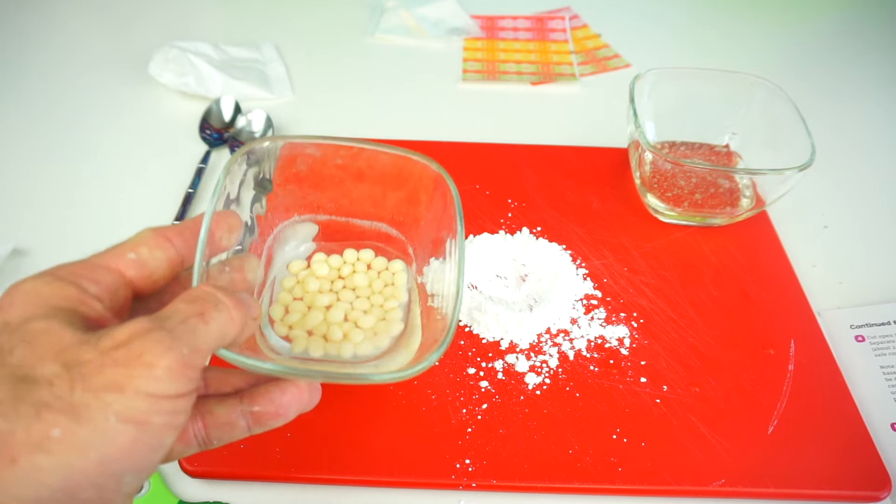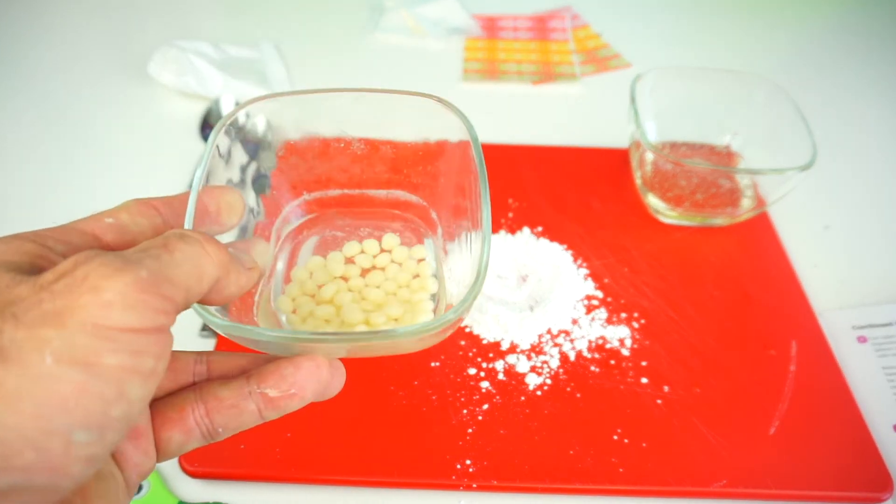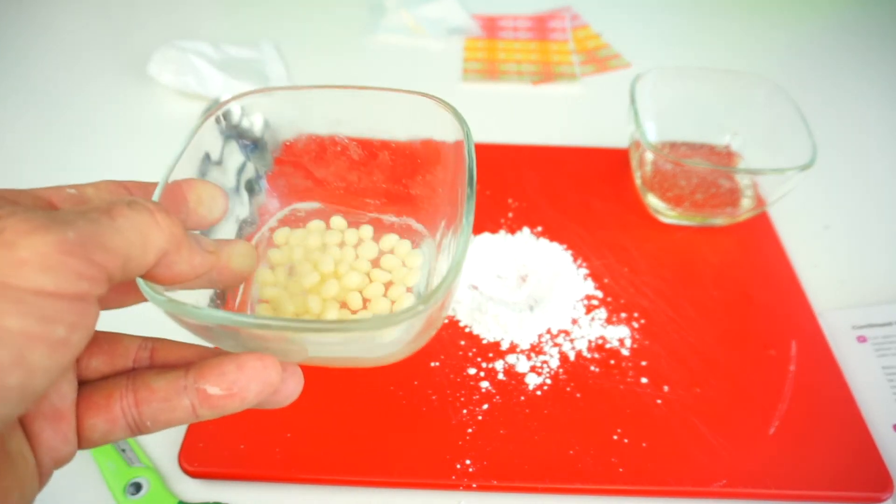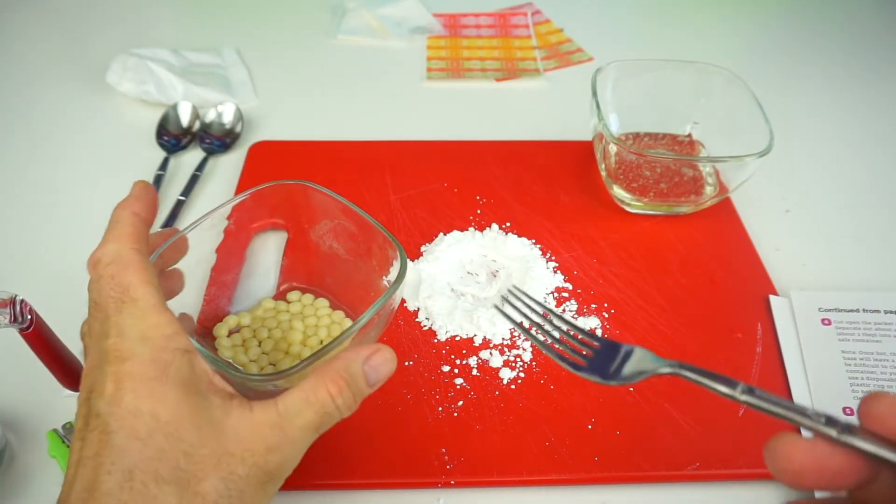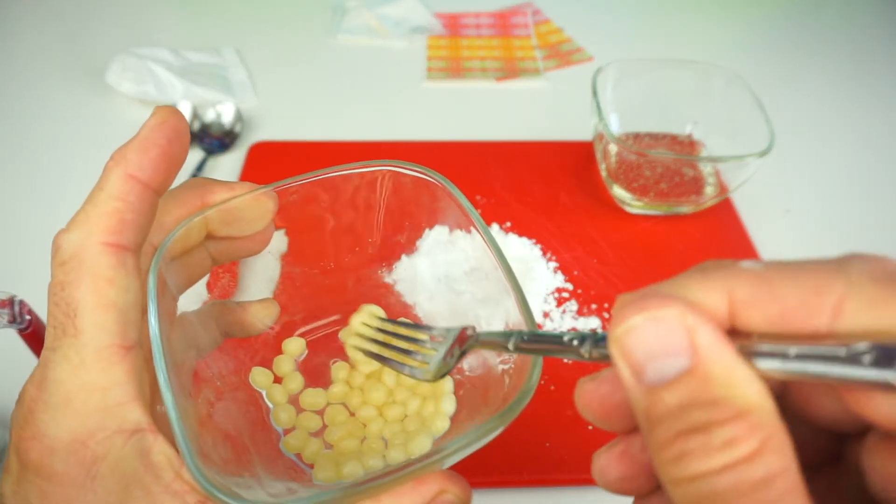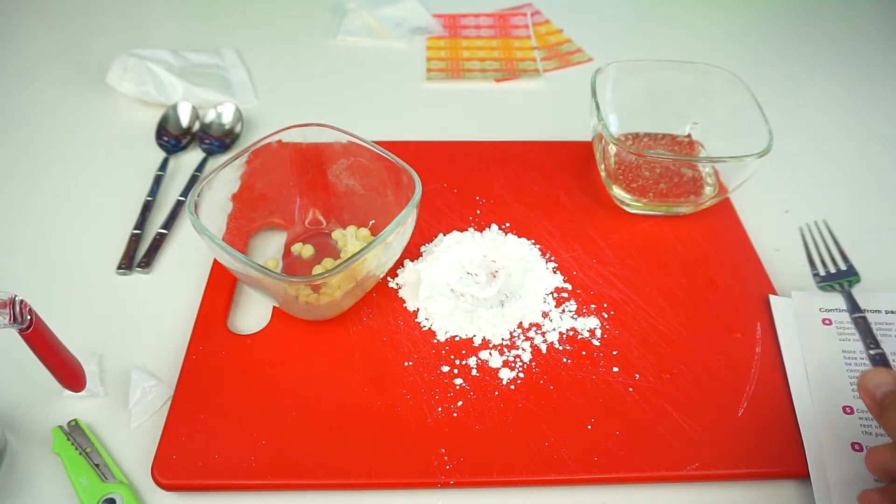Next thing we need to do is drain some of the water out of the gum base and microwave for 30 seconds or until soft. Okay, now that I have my gum base nice and soft, I want to make sure it's soft with the fork. Okay, now we're ready for the next step.